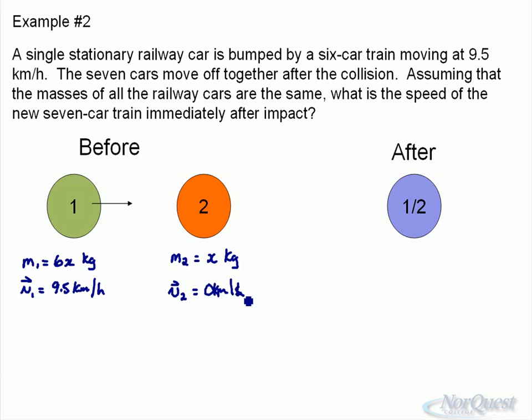Six-car train, all the cars are the same, so the relationship is that first six-car train should have six times the mass. Six plus x will give you seven x kilograms, and what we want to know is what is the velocity of these objects after.